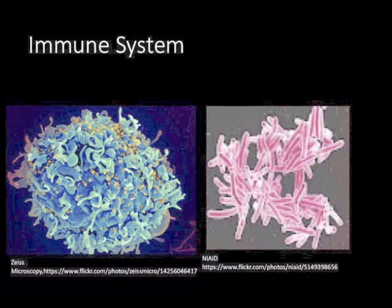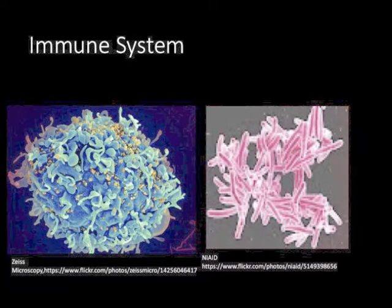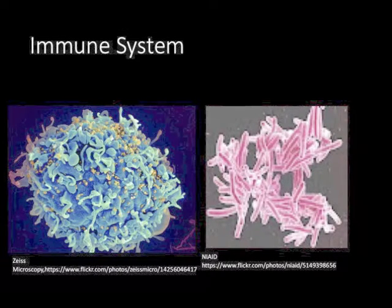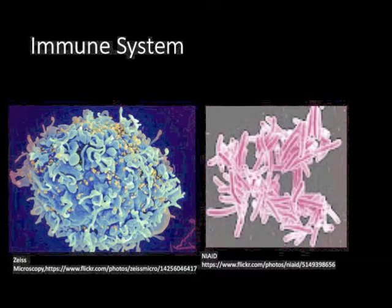But the immune system can also cause disease when it's not doing the right thing, such as with allergies, autoimmune disorders, and transplant rejections, to name a few. Most often, medications for the immune system are used to enhance or suppress our immune system.